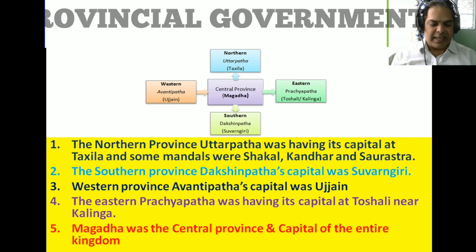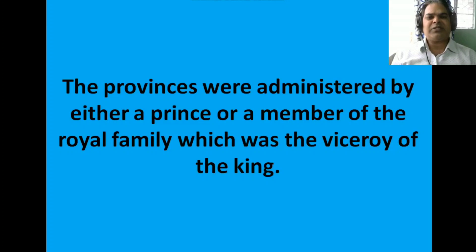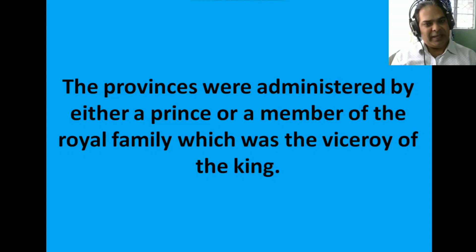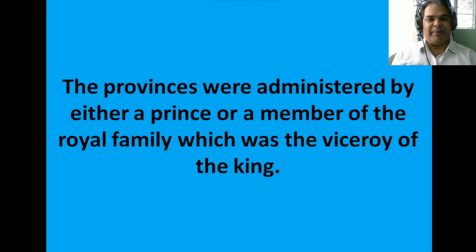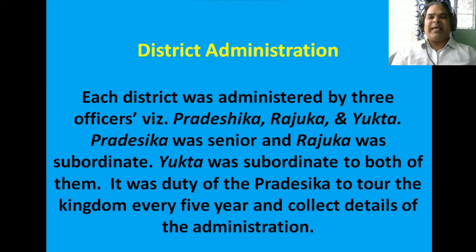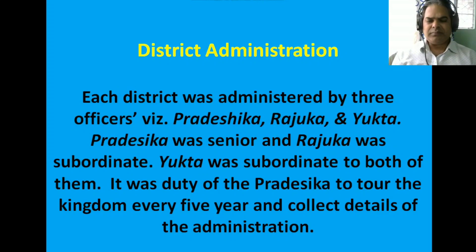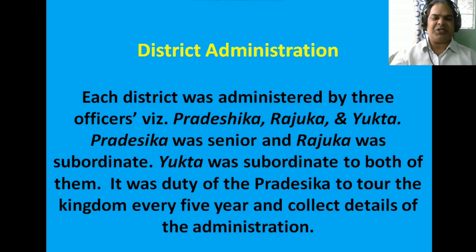Provinces were administered by either a prince or a member of the royal family who served as the viceroy of the king. All provinces were headed by members of the royal family.